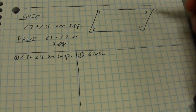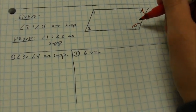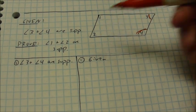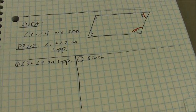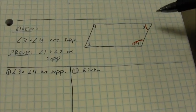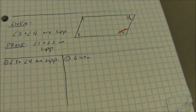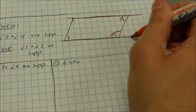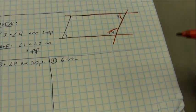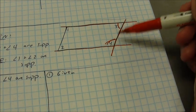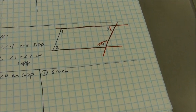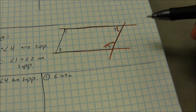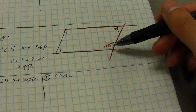In this proof, I'm told that angle 3 and angle 4 are supplementary — no particular reason to think they're congruent, but they are supplementary. I want to show that angle 1 and angle 2 are supplementary. The important thing to notice is what type of angles these are. I have two parallel lines — or two lines that appear to be parallel — and a transversal cutting across. These are two angles on the same side of the transversal, called same-side interior angles. We know that if those angles are supplementary, the lines forming them are parallel.